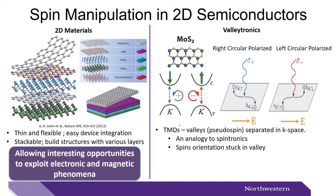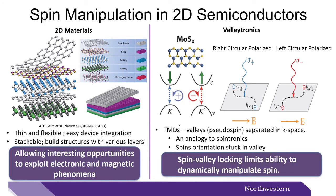However, this spin-valley locking, as it's called, limits our ability to dynamically manipulate spin between spin states, which has been an advantage for 3-5 devices, some of which were mentioned before. So we can ask a question: is there a 2D material without spin-valley locking and more analogous to 3-5 semiconductors?